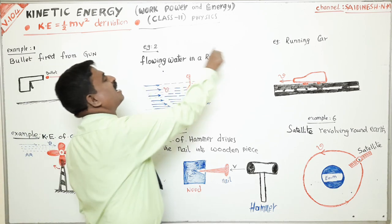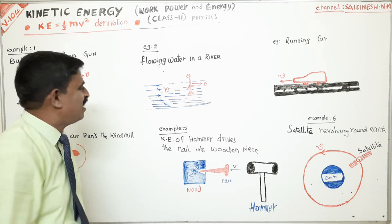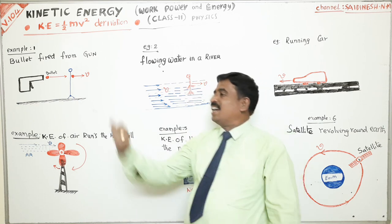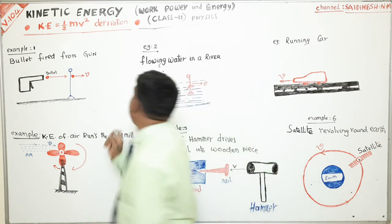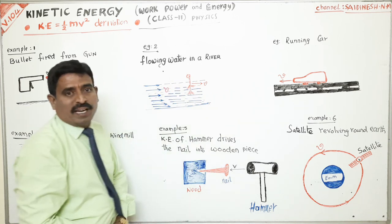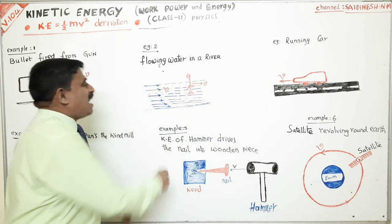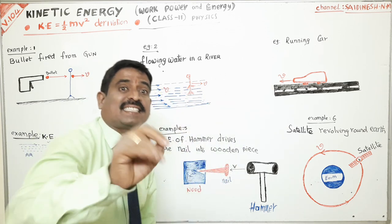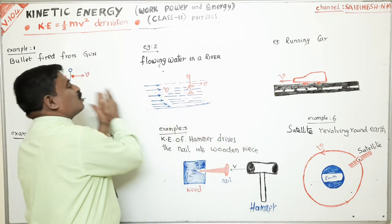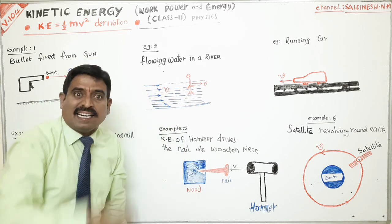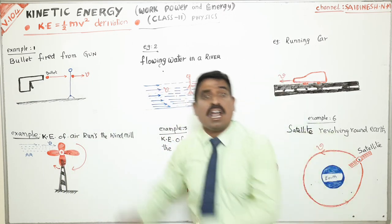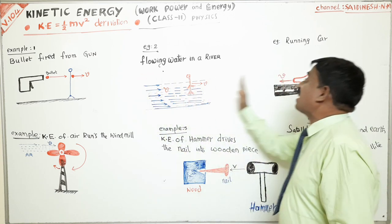Flowing water in a river has kinetic energy. When the water is at rest, you can go inside and stand — nothing happens. But when the Krishna, Godavari, Tungabhadra, or Kaveri river is flowing during cyclone or rainy season, the water has velocity and therefore kinetic energy. If you stand in the middle of the flowing river, you are washed away due to the kinetic energy of the water.